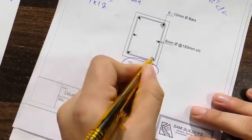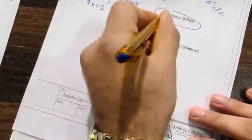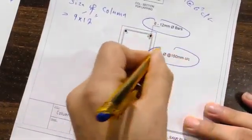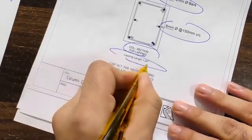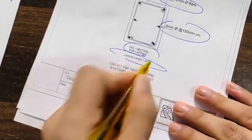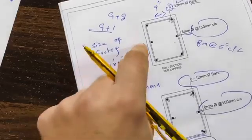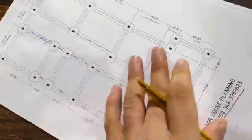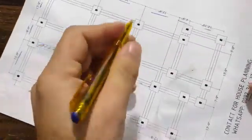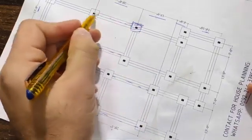You can see the column section for lapping. The steel reinforcement size is the same; only the lapping length changes, which is 24 inches for this column. This is its size, and this is the layout plan inside the footing.